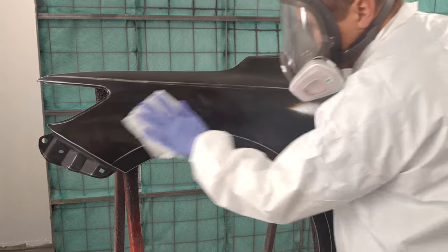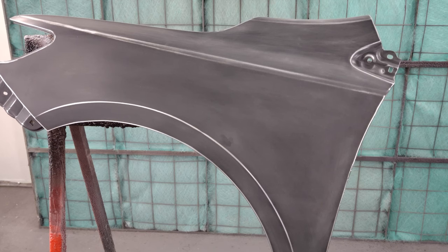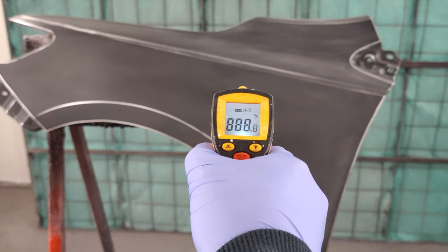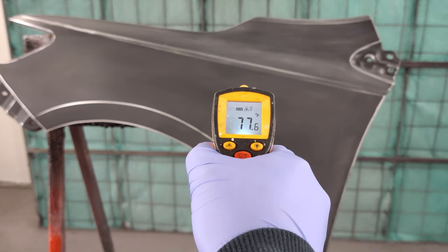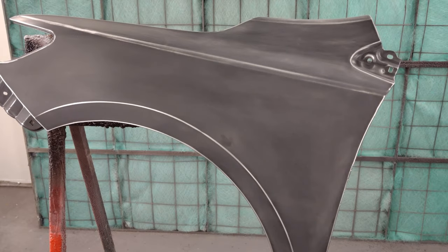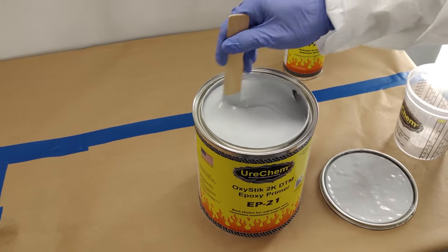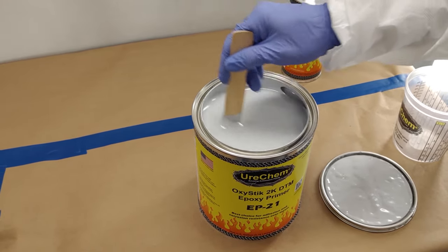Remember, air temperature does not directly correlate to the surface temperature of your project. Once you have your parts properly prepared and the conditions are good for painting, start by wearing the appropriate personal protective equipment, and only use this product in areas that are free of ignition sources, such as heat, sparks, or open flames.